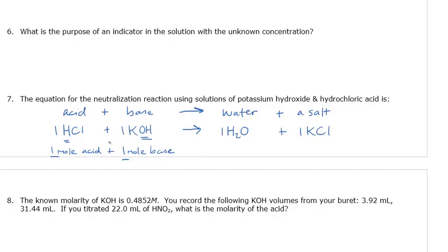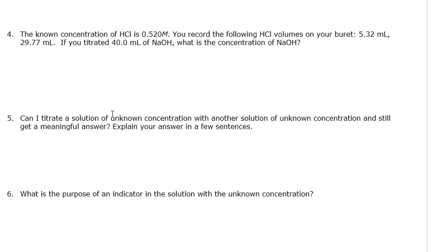This is our general equation for any neutralization or titration reaction. For our examples, more often than not, you're going to find that it's a 1-to-1 ratio, which makes it really simple to solve. So keep that in mind. Let's look at number four. Question number four says a known concentration of HCl is 0.520 molar. You're going to be given some concentration that we know — this is our known.